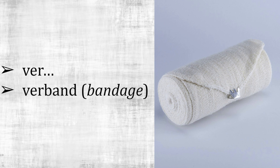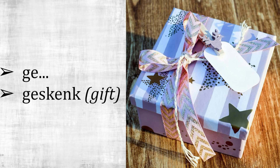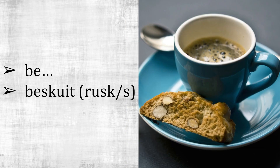This can also be difficult because you can confuse the sound with the prefix word 'ver' — ver, verband. Ge — ver — geskenk. Ge — ver — geskenk. Be — be — be — ver — beskyt. Be — ver — beskyt.